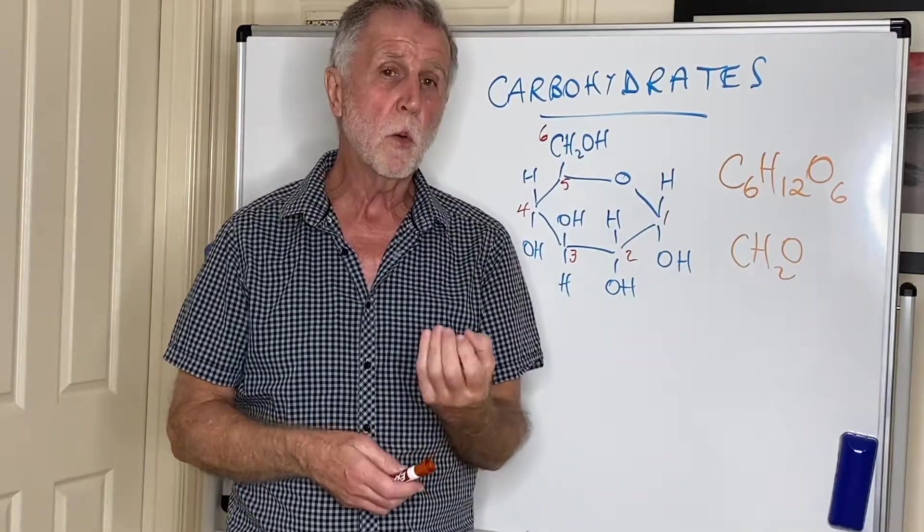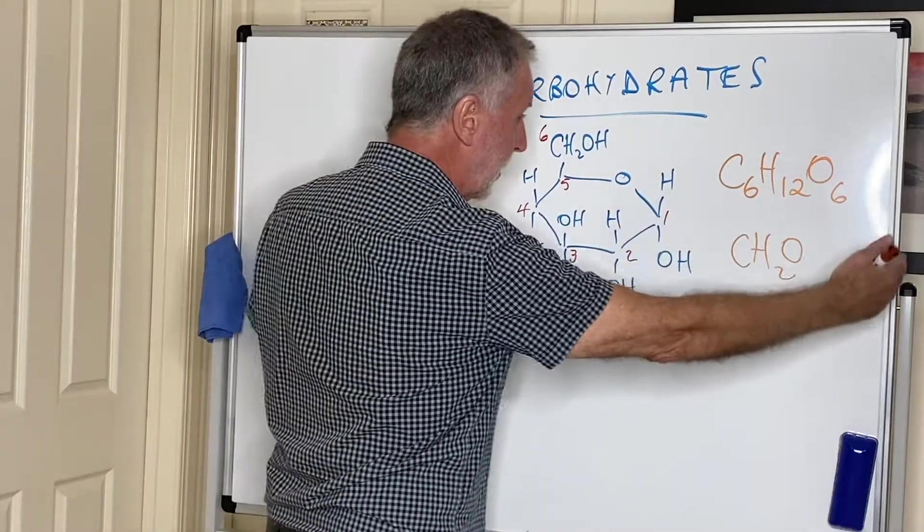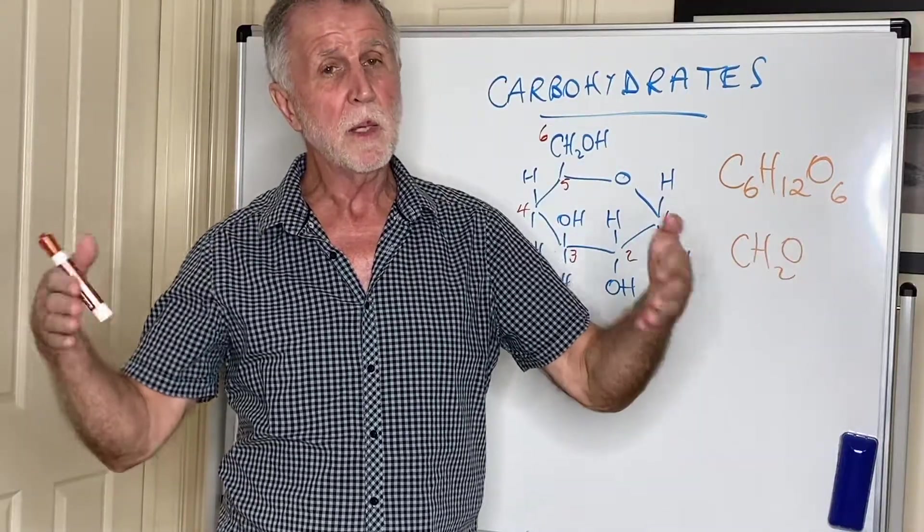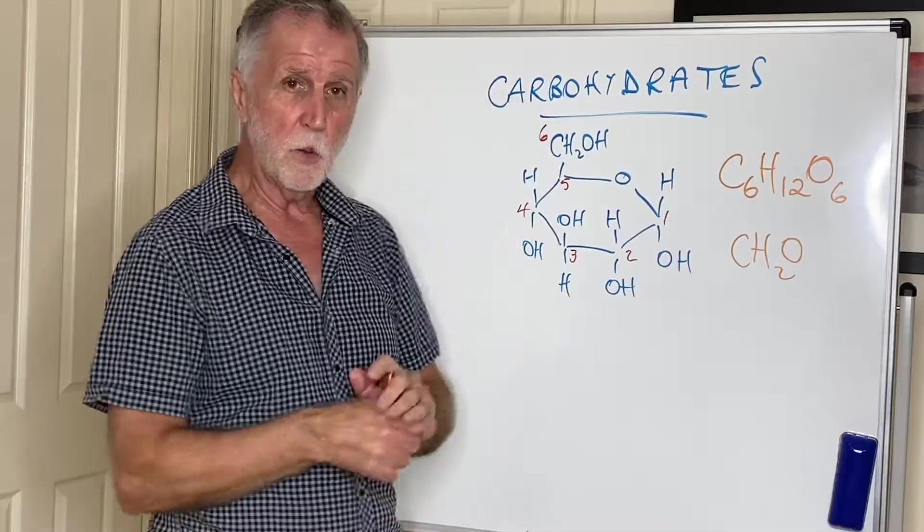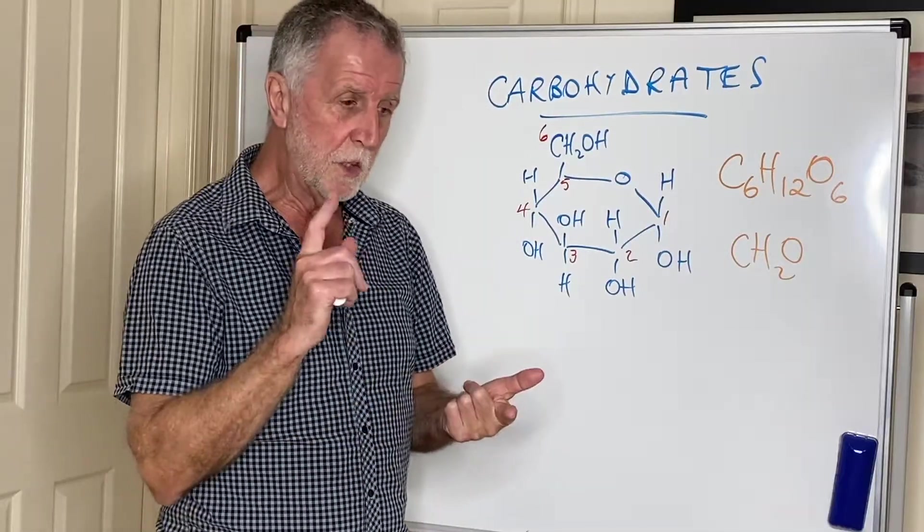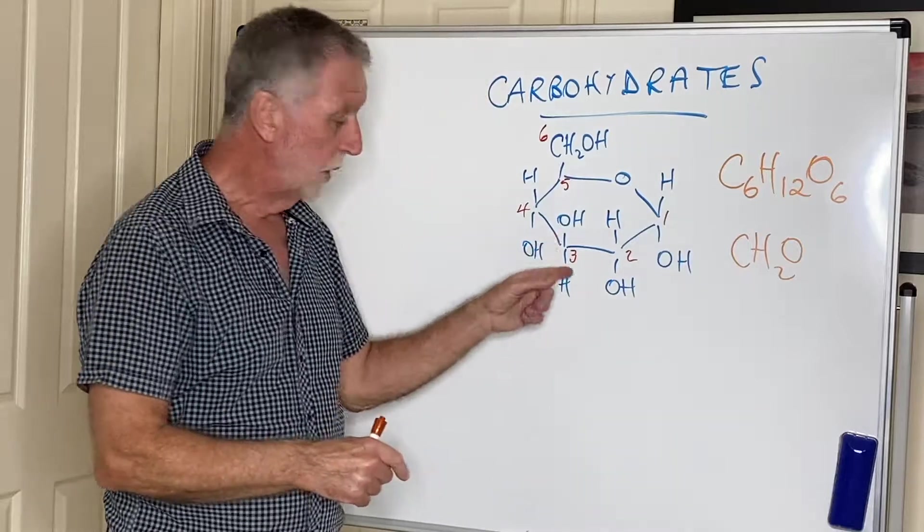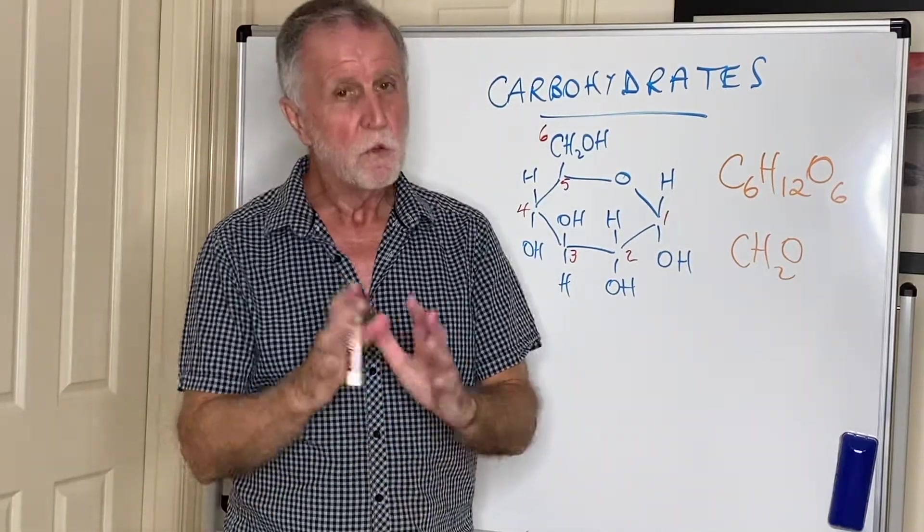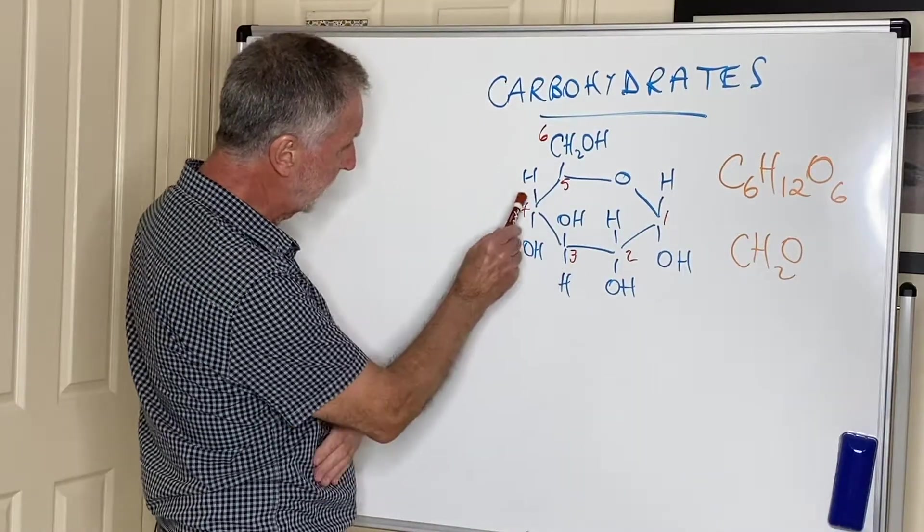If you join two units together you make a disaccharide, and if you join many units together you make a polysaccharide. And polysaccharides are carbohydrates. The monosaccharides that the syllabus mentions are glucose, fructose, and galactose. Now they don't give you the structure of galactose, but it's almost identical to glucose except at carbon number four, the OH and the H change places.